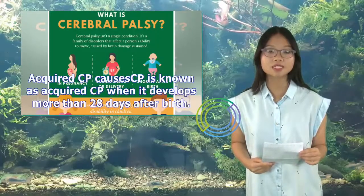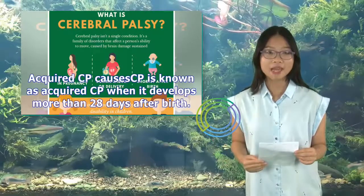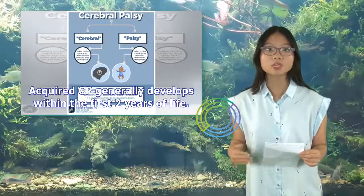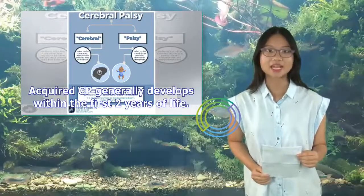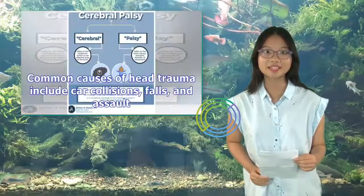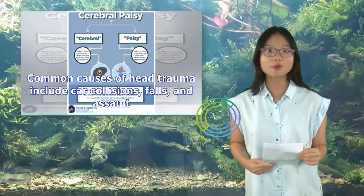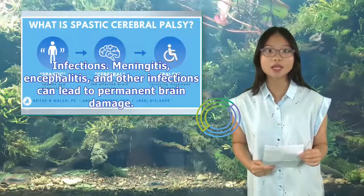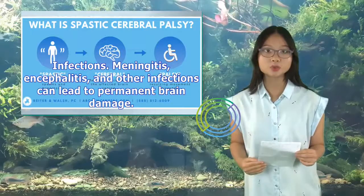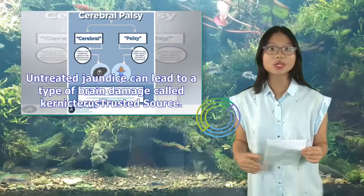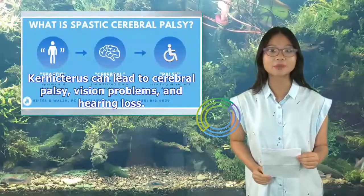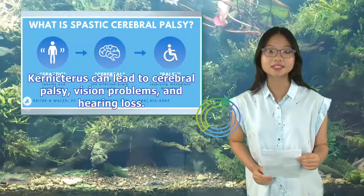CP is known as acquired CP when it develops more than 28 days after birth, and it generally develops within the first two years of life. A serious head injury can lead to permanent brain damage; common causes of head trauma include car collisions, falls, and assault. Infections such as meningitis and encephalitis can also lead to permanent brain damage. Untreated jaundice can lead to a type of brain damage called kernicterus, which can cause cerebral palsy, vision problems, and hearing loss.